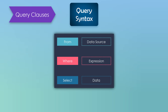We first have the from clause, which represents the initialization of the query. Here we define the data source, which is the sequence that we want to query. The data source could be a data table, an array, a list, or something else. We can also use aggregate instead of from clause — it's also to define the data source. So at the first position we either use from or aggregate.